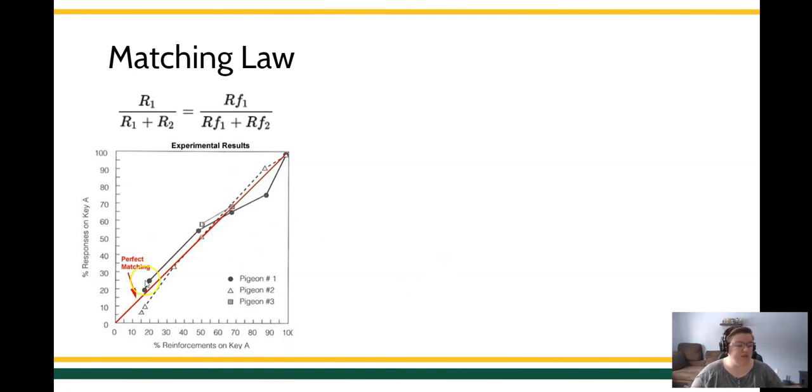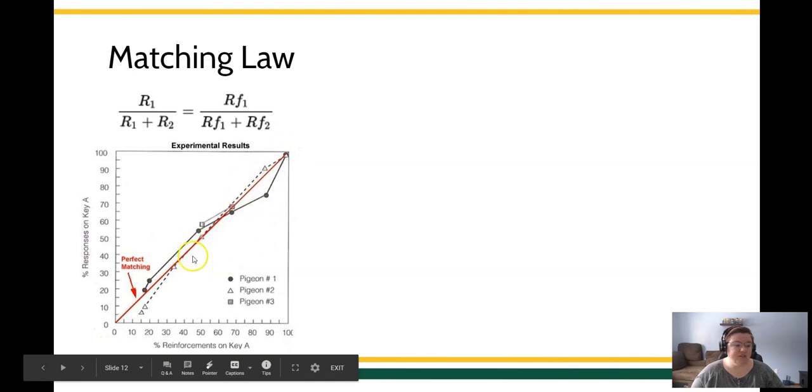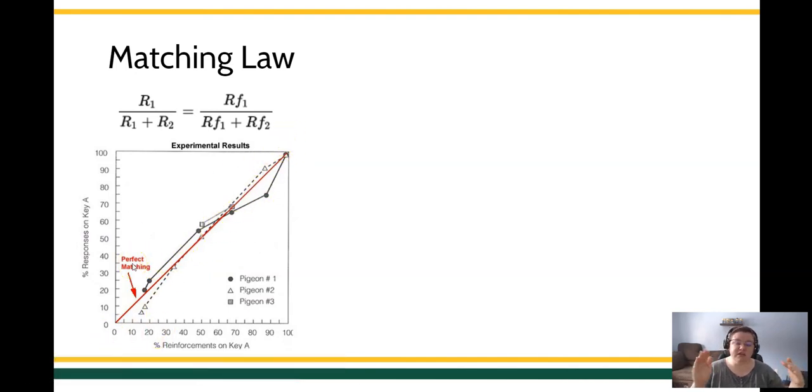The graph here is showing you that if you have perfect matching and you have two different responses, each of which have a level of reinforcement available, that if you perfectly allocate your responding to the amount of reinforcement available, you have what's called matching. You match the amount of reinforcement, or you match your responses to the amount of reinforcement available.